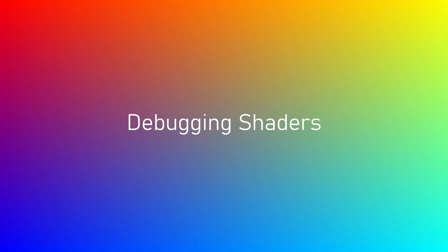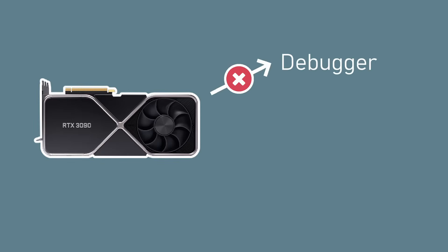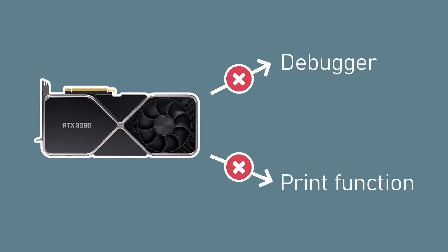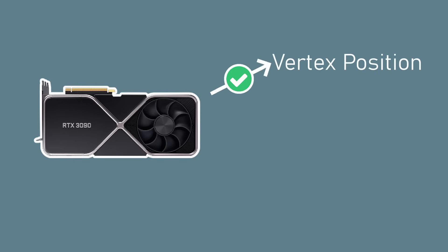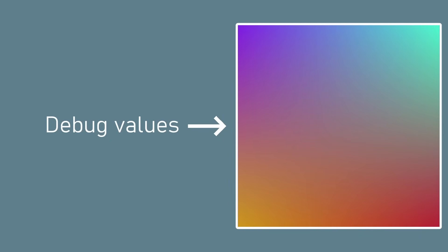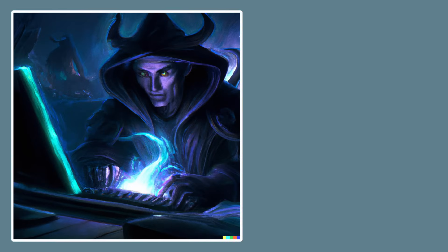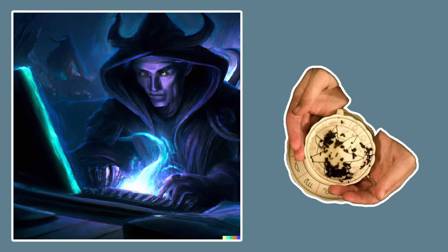One last thing to quickly mention before we finish up: debugging shader code can be pretty difficult. There's no way to hook up the GPU to a debugger and there's no print function to spam variables into the console. The only real output is vertex positions in the vertex shader and pixel colors in the fragment shader. So often what you'll end up having to do is output the values you're debugging as colors and try to interpret them — remembering that colors can only be between 0 and 1 so you might have to scale the value first. Once you get better at it you'll start feeling like a witch or wizard trying to interpret tea leaves, and it's no wonder that people think shaders are black magic.